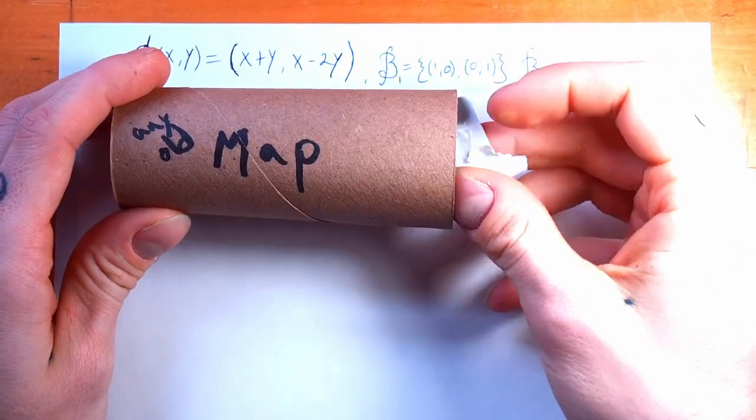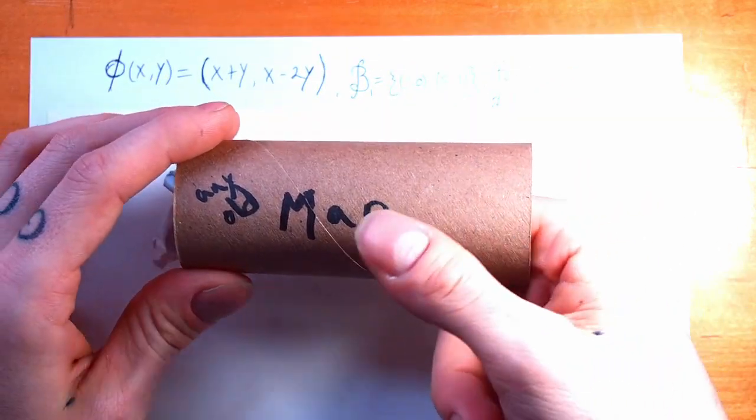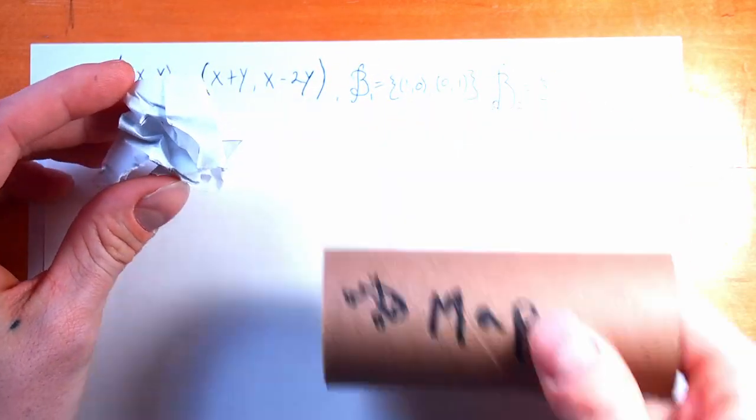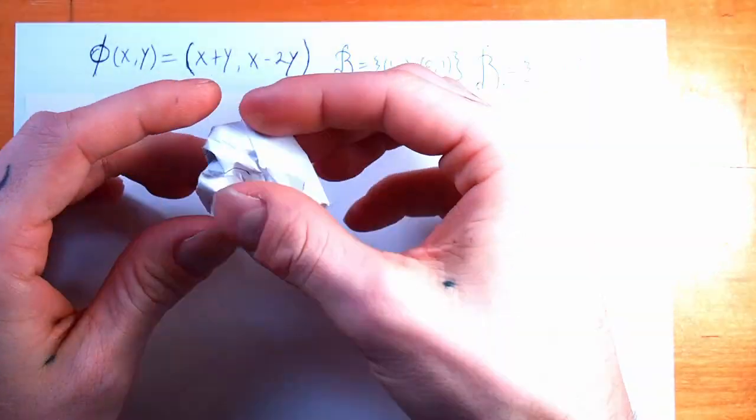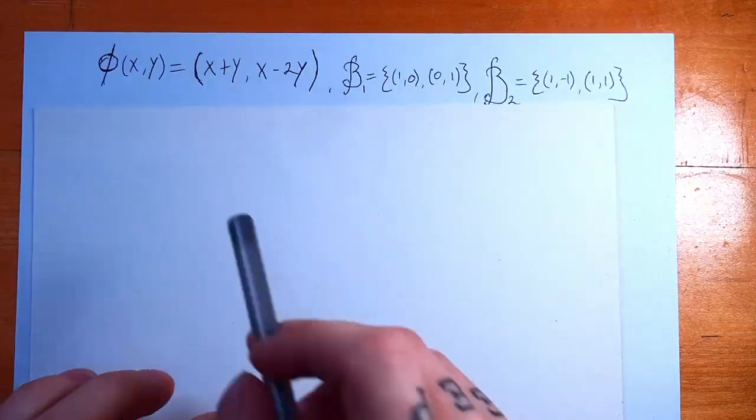But let's see what happens when we run our vector space through any old map, not necessarily linear. Take this guy, put it in over here, push it through. All right. What do we have here? Oh, oh boy, oh.